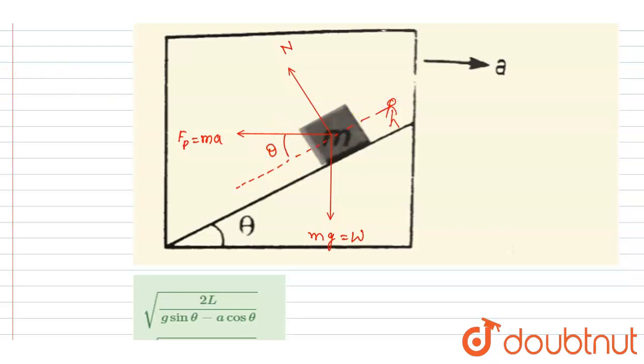...if you see this angle is theta, so the component of ma will be ma cos theta, and it will be mg sine theta. So it will be mg sine theta and ma cos theta.